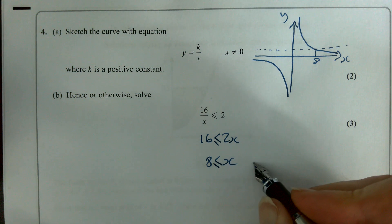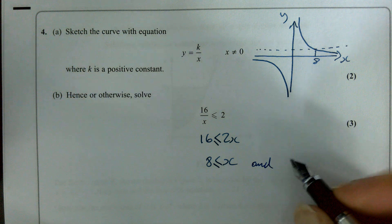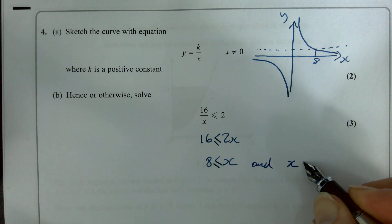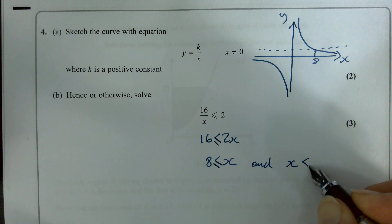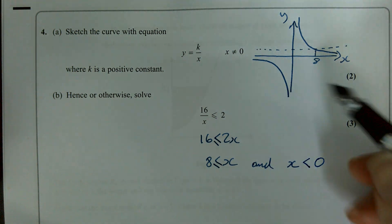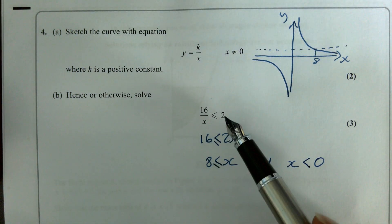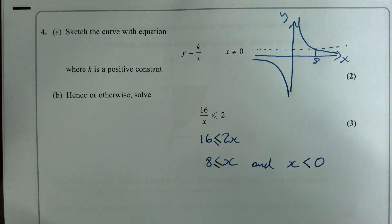So not only is x going to be bigger than or equal to 8, but you're also going to have x being smaller than 0. Because whenever x is smaller than 0, you're going to get a negative answer, aren't you? And that's always going to be smaller than 2.